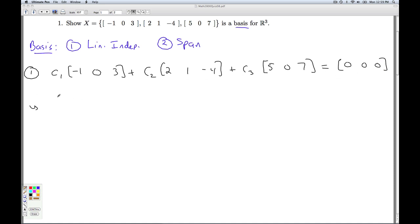Well, this gives rise to a system of linear equations for c₁, c₂, and c₃. When we multiply constants times vectors in R³, we multiply each of these entries by those constants, and then we add corresponding entries together. So I'm going to have -c₁ + 2c₂ + 5c₃, and that all has to equal zero.